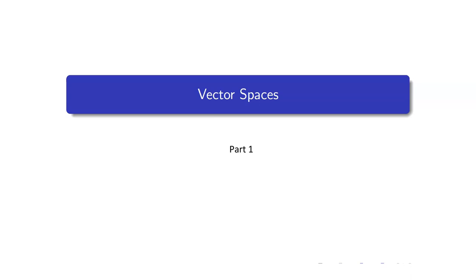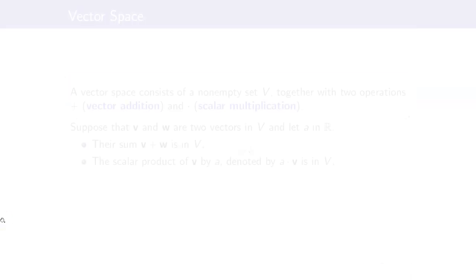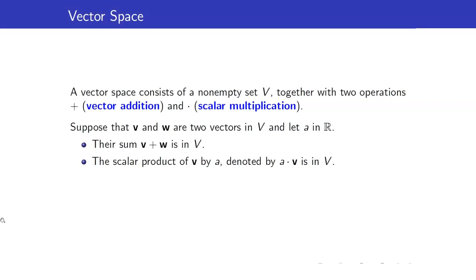In this lesson, I am going to talk about vector spaces. What is a vector space? A vector space consists of three things. We should have a non-empty set V together with two operations: vector addition and scalar multiplication.